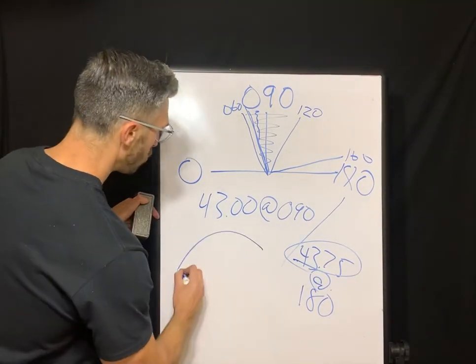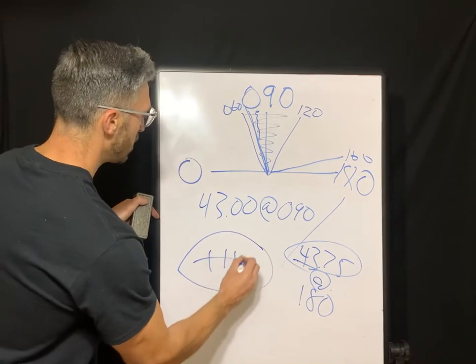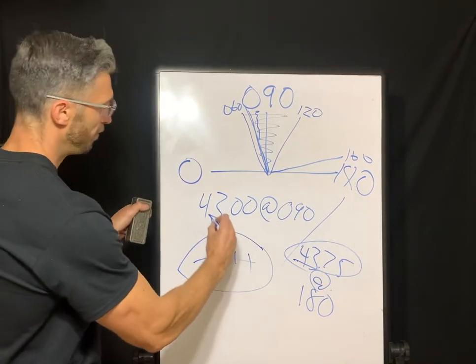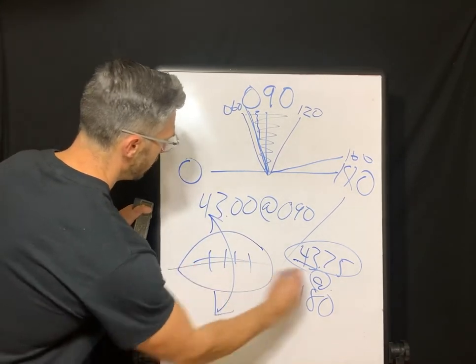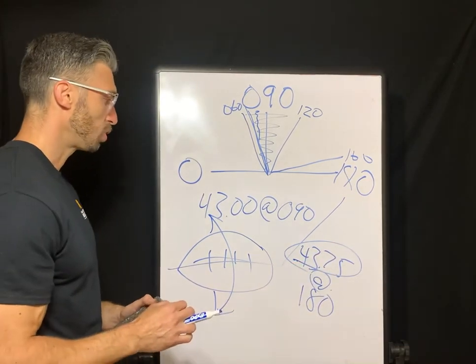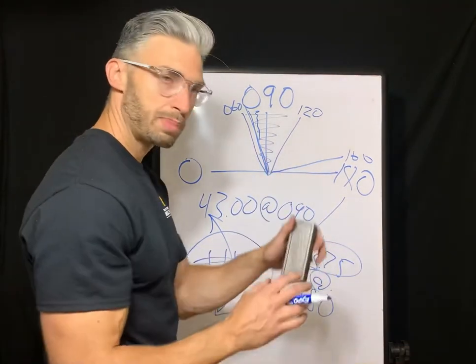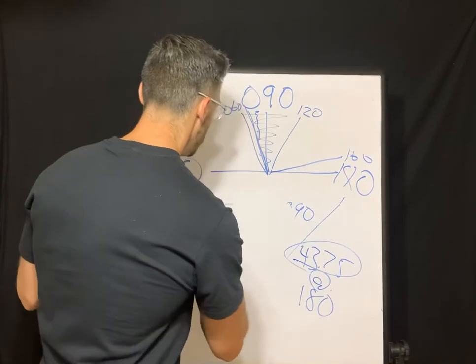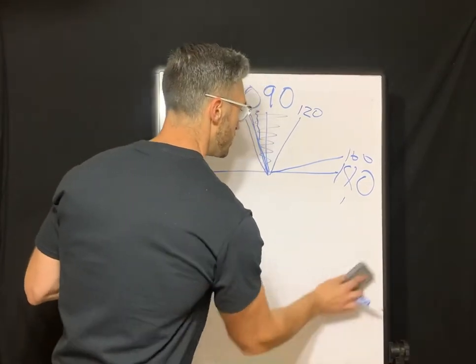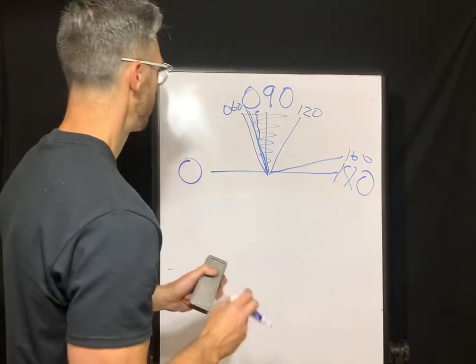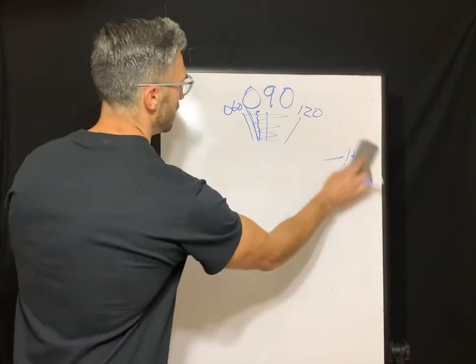I don't even need to do another example. Remember, 43 is flatter than 43.75. The K readings are measuring the corneal curvature, they're measuring the corneal dioptric strength. So we know it's steeper along the 180, which is our horizontal, which is our against the rule astigmatism classification. So we've got with the rule. And again, with the rule is a football laying on the ground like that. Your vertical is steeper, flatter on the horizontal meridian.